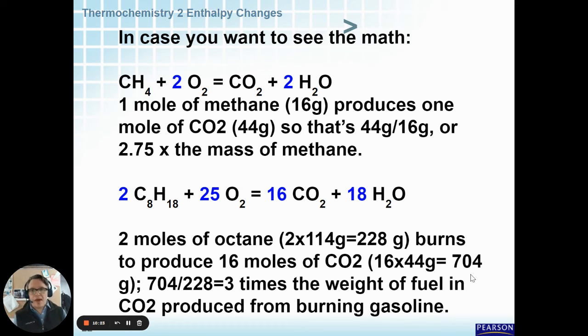Here's some more of the math for that. If you look at the balance equations for burning the two things, methane and octane, you can see that one mole of methane produces one mole of CO2. That ends up being almost three times the mass of methane and CO2 produced. Why is it more mass of CO2? Because you're adding oxygen to the carbon.